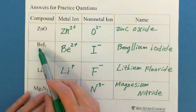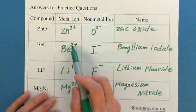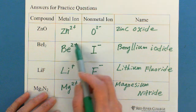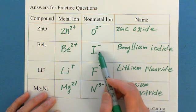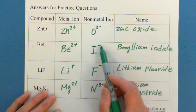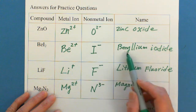Be, you can find in the second column, beryllium 2+, and iodine, iodine is seven group, which is negative charge, negative one charge. For naming, is beryllium iodide.